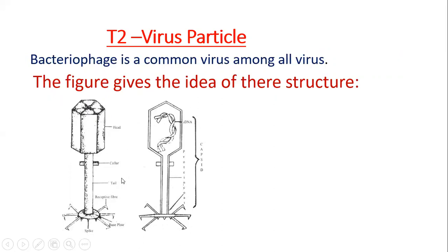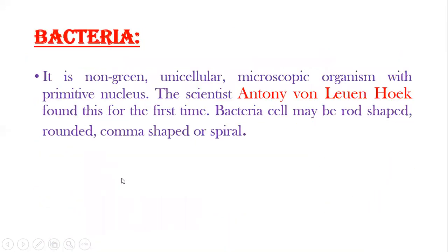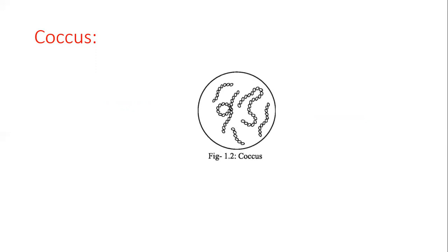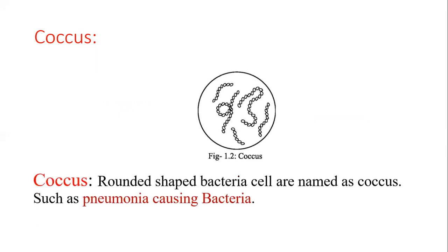Bacteria are non-green, unicellular, microscopic organisms with a primitive nucleus. The scientist Antony van Leeuwenhoek discovered bacteria for the first time. Bacteria may be rod-shaped, rounded, comma-shaped or spiral. Bacteria can be classified according to their shape as follows: first, Coccus — rounded shape bacteria are named Coccus, such as pneumonia-causing bacteria.